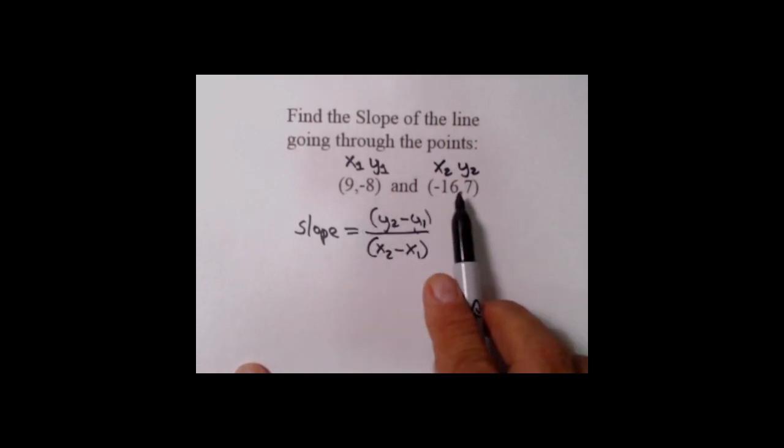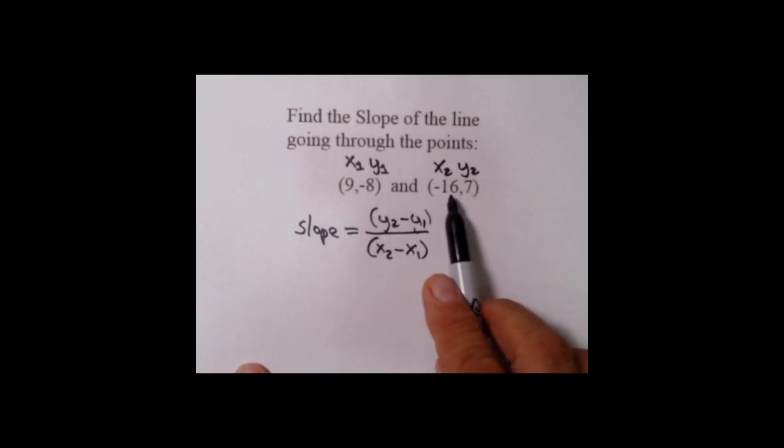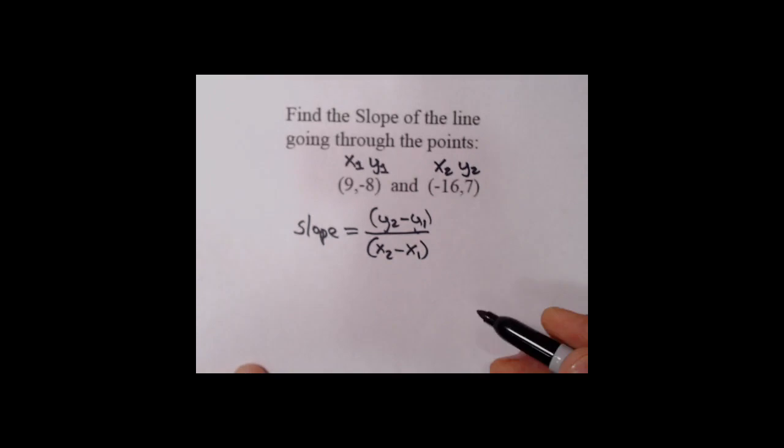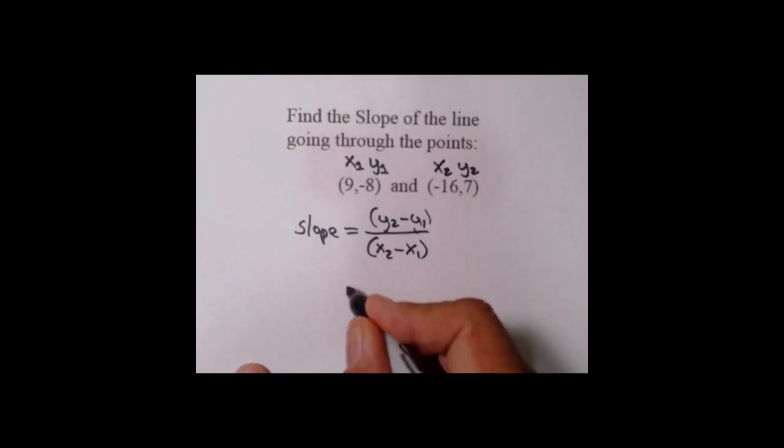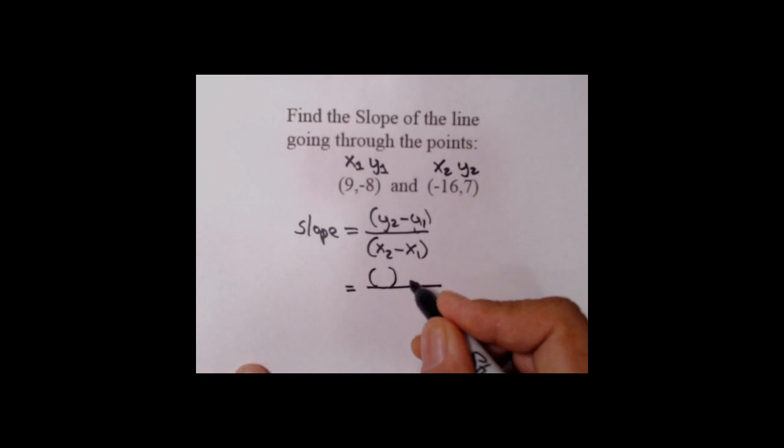It doesn't make any difference which point we take as number one and two, but once we decide, we definitely want to label them. Here's one of the best ways to work with this: break this fraction up. Make a hole for Y2, minus—you see this minus in the formulation—and then a hole for Y1. Same thing downstairs: hole for X2, the minus, and the hole for X1.